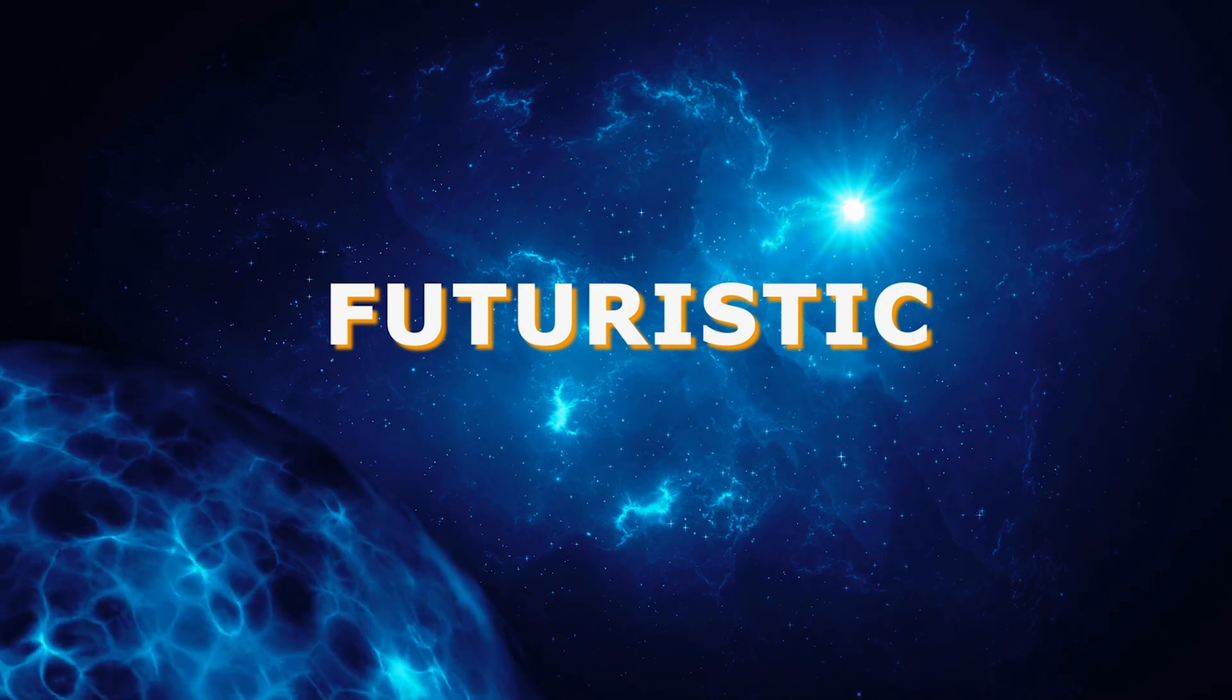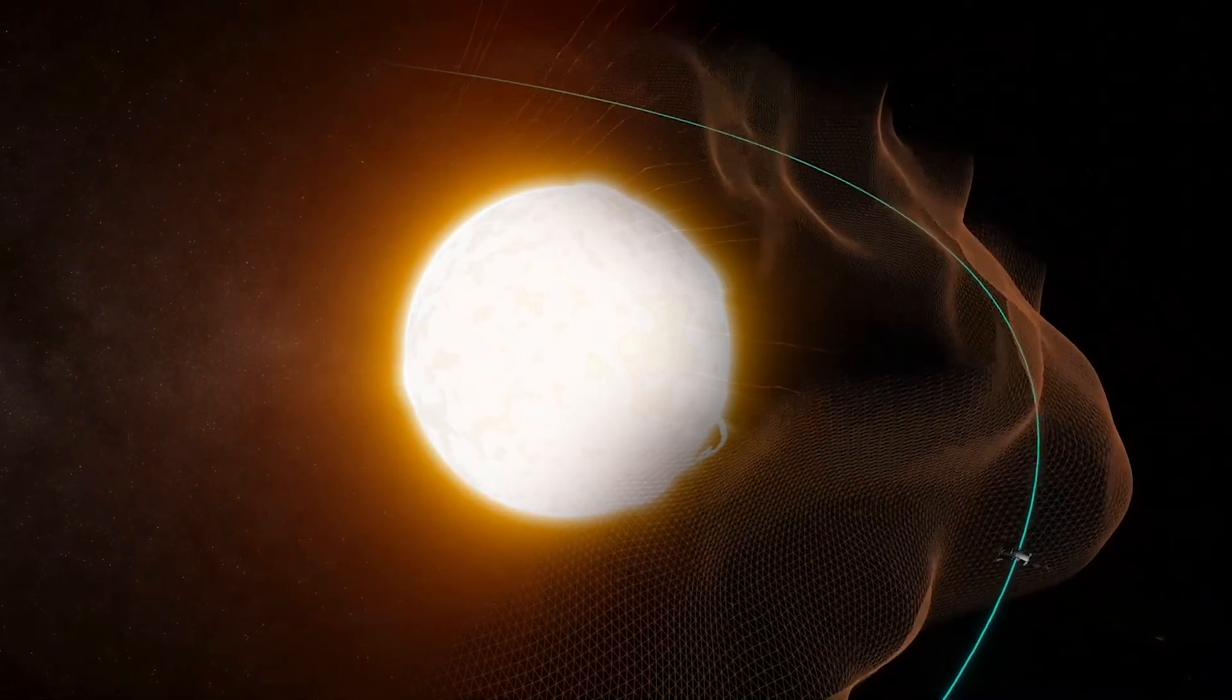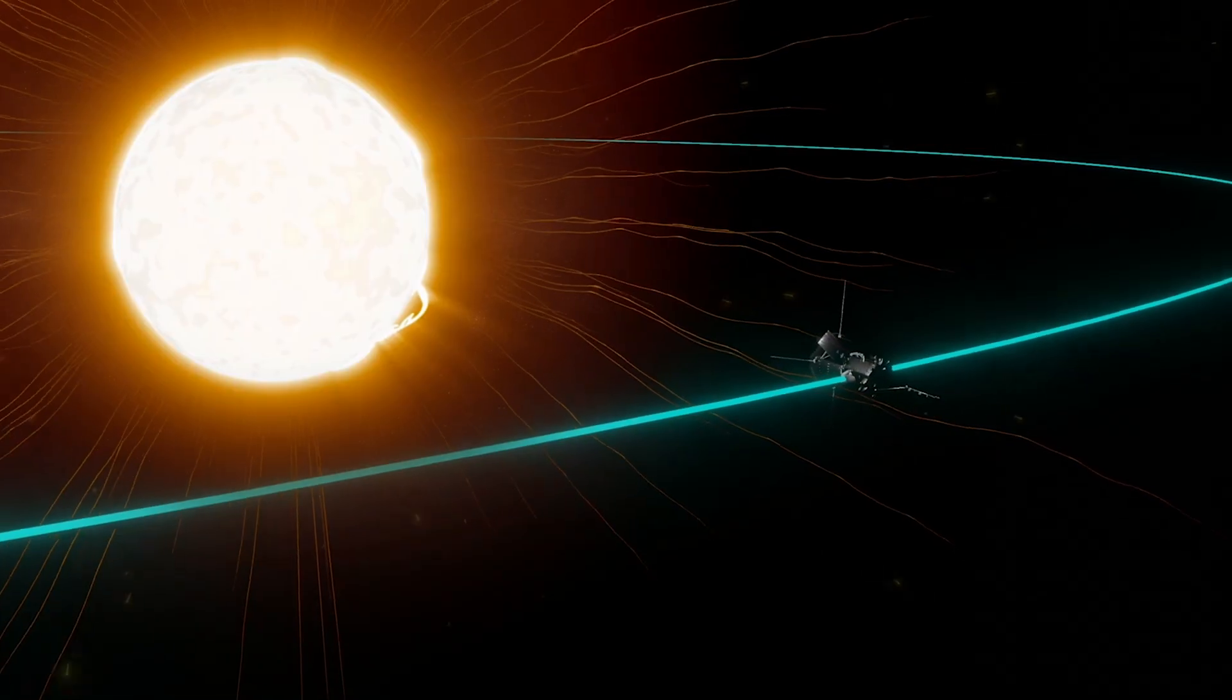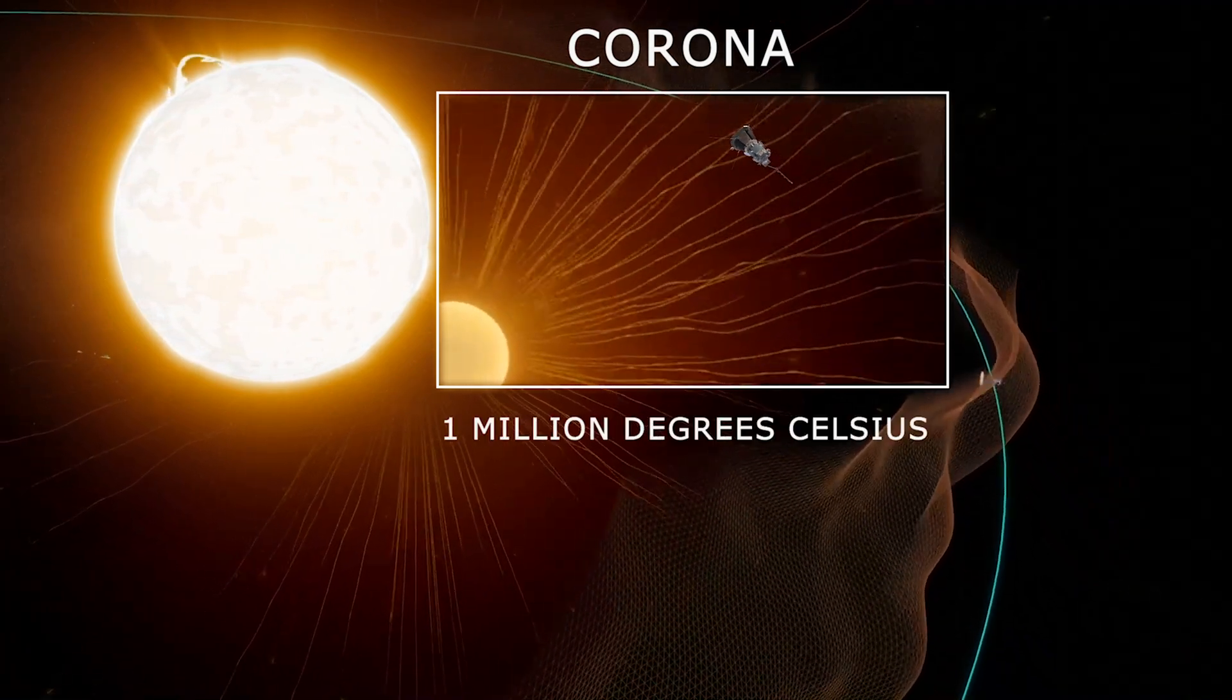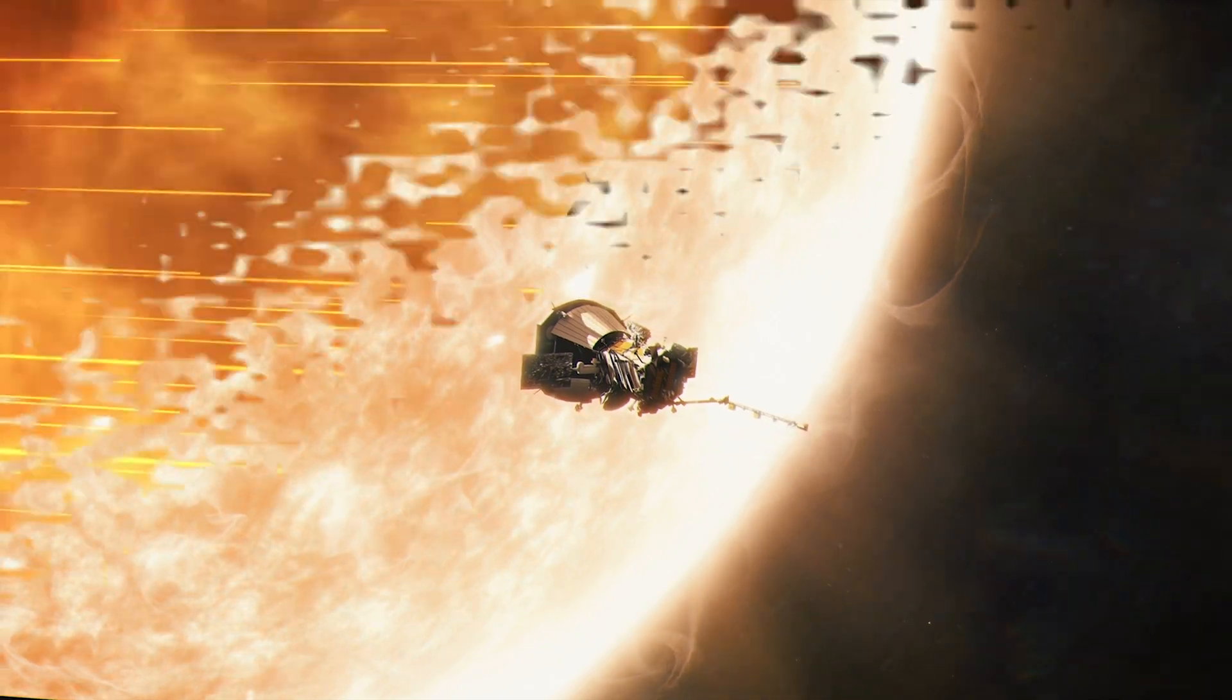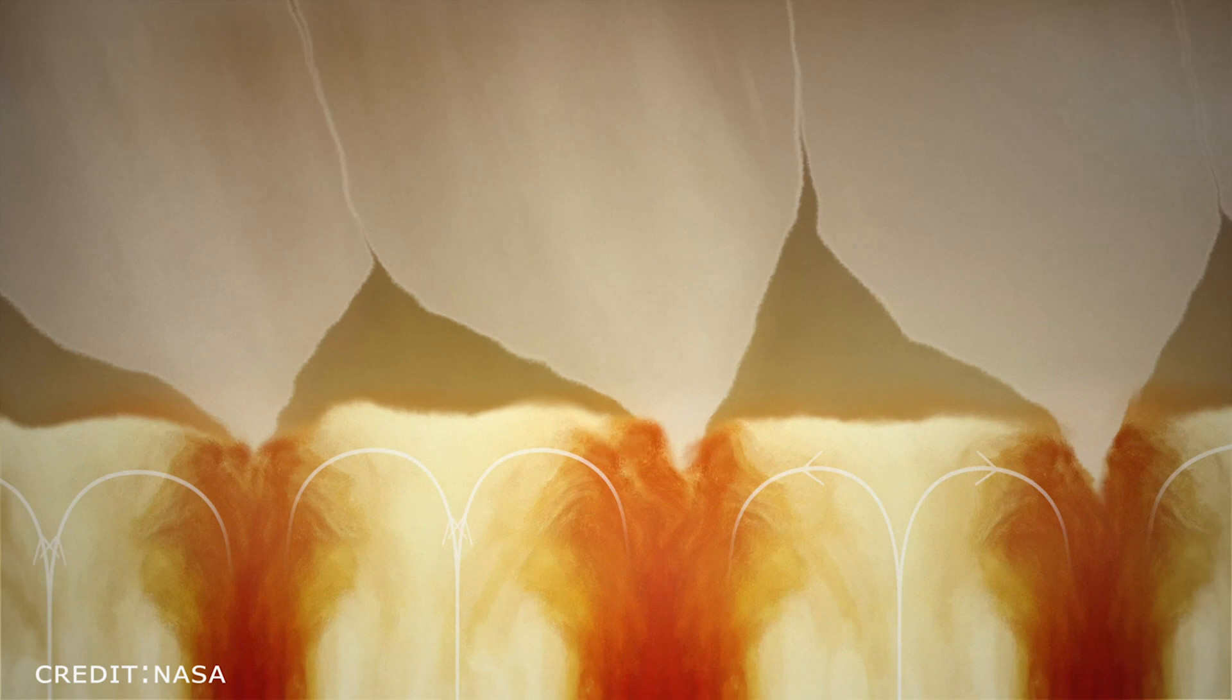The Parker Solar Probe is the first human-made spacecraft to reach the sun, creating history and captivating science lovers. The probe has entered the sun's outer atmosphere, the corona, where temperatures reach an astonishing 1 million degrees Celsius. It is remarkable that the probe has not melted and its instruments are still functioning properly in such an inhospitable environment.